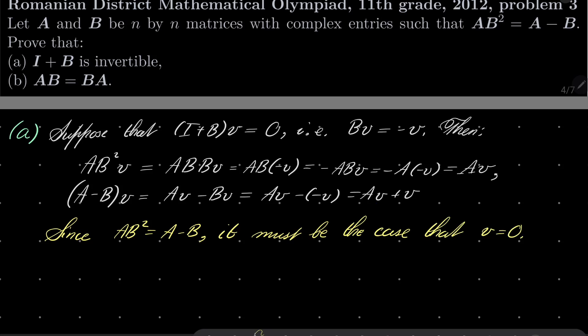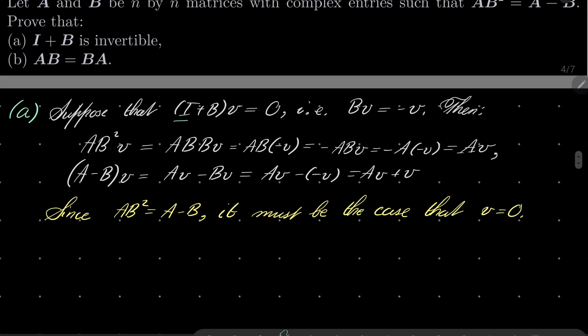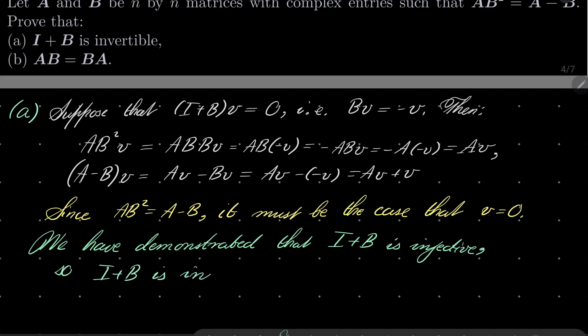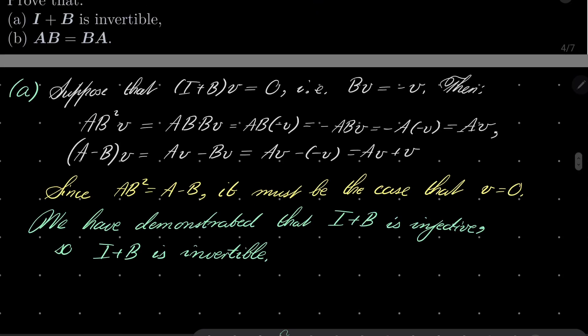So our function represented by I plus B is injective because it only attains the value of zero when the argument is zero. We have demonstrated that I plus B is injective. The linear mapping demonstrated by this matrix is injective. So I plus B is invertible, which closes the proof of part A. QED for part A.